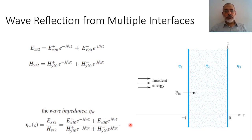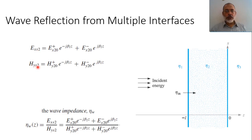Now we introduce a new definition: the wave impedance. The wave impedance is the ratio of the phasor electric field to the phasor magnetic field at any point inside medium 2. So the wave impedance ηW = EXS2 / HYS2. Since both electric and magnetic fields are functions of Z inside medium 2, the wave impedance is not a constant value — it is a function of Z.